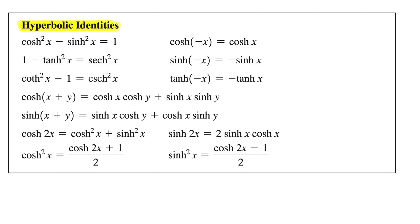Hyperbolic functions are similar to trigonometric functions in a lot of ways, including that they have all these identities. These look a lot like trig functions, but they're a little different. For trig functions we'd have cos squared plus sine squared equals 1, whereas here we have cosh squared minus sinh squared equals 1, where cosh is the hyperbolic cosine and sinh is the hyperbolic sine. So they're a little bit different.